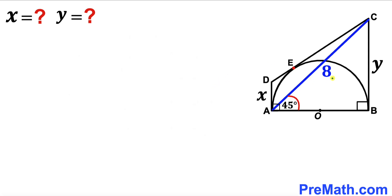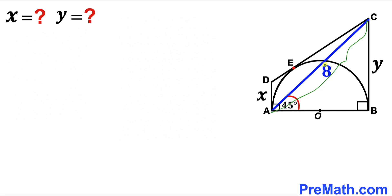Welcome to pre-math. In this video we have a semicircle with center O fully inscribed in a trapezoid ABCD, such that the base AD is X, base BC is Y, segment AC is 8 units, and angle BAC is 45 degrees. Our task is to find the value of X and the value of Y.